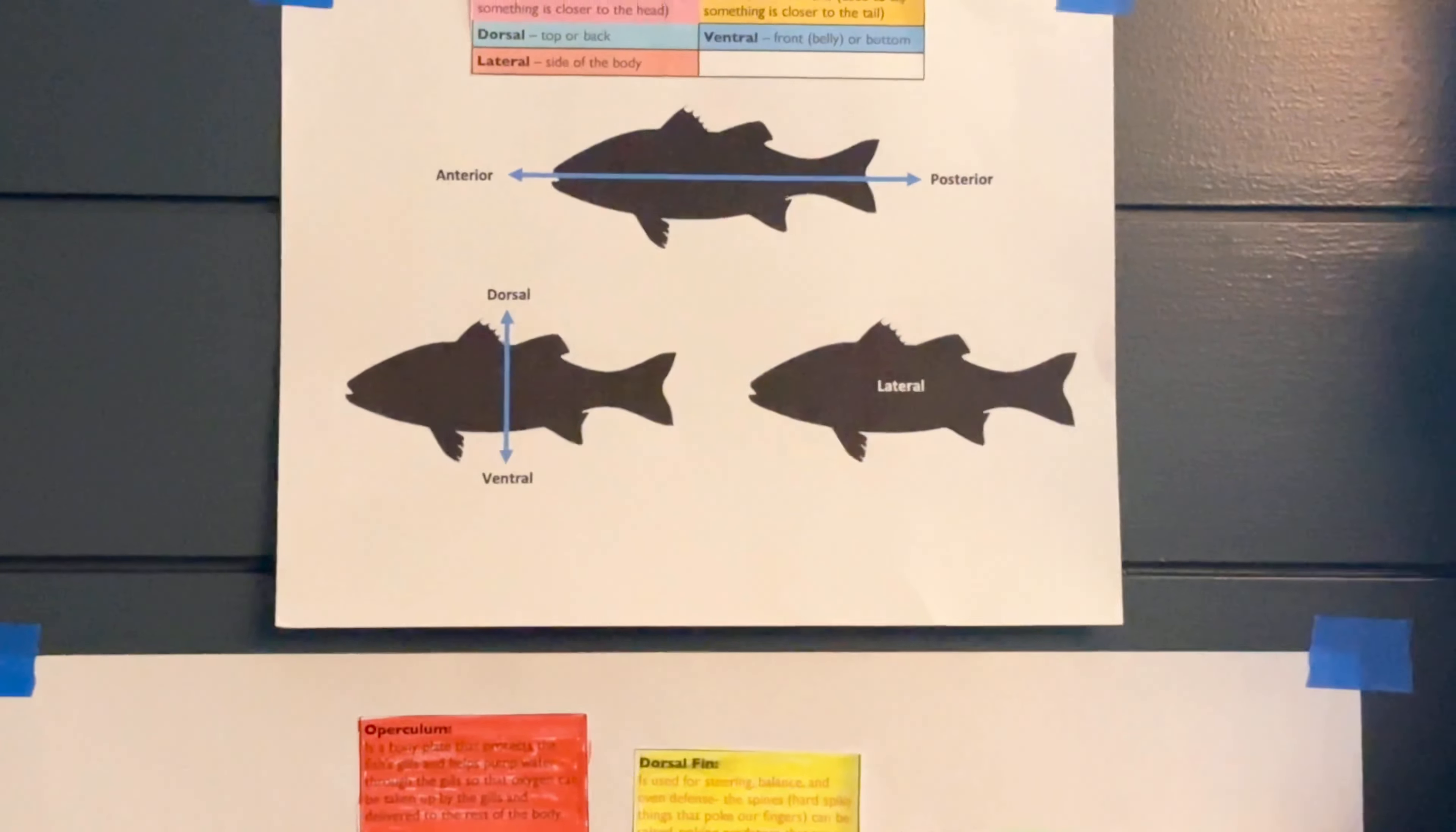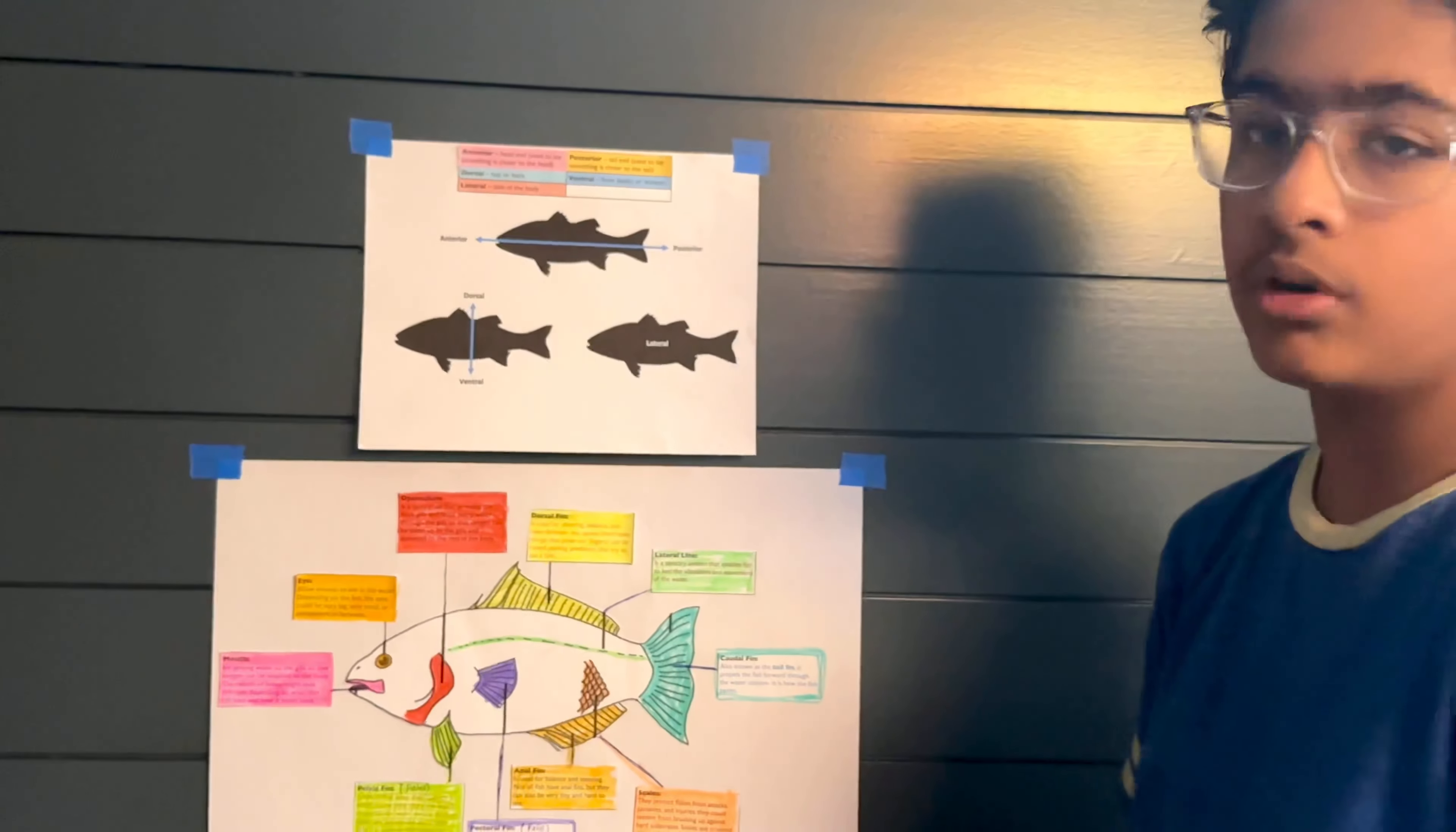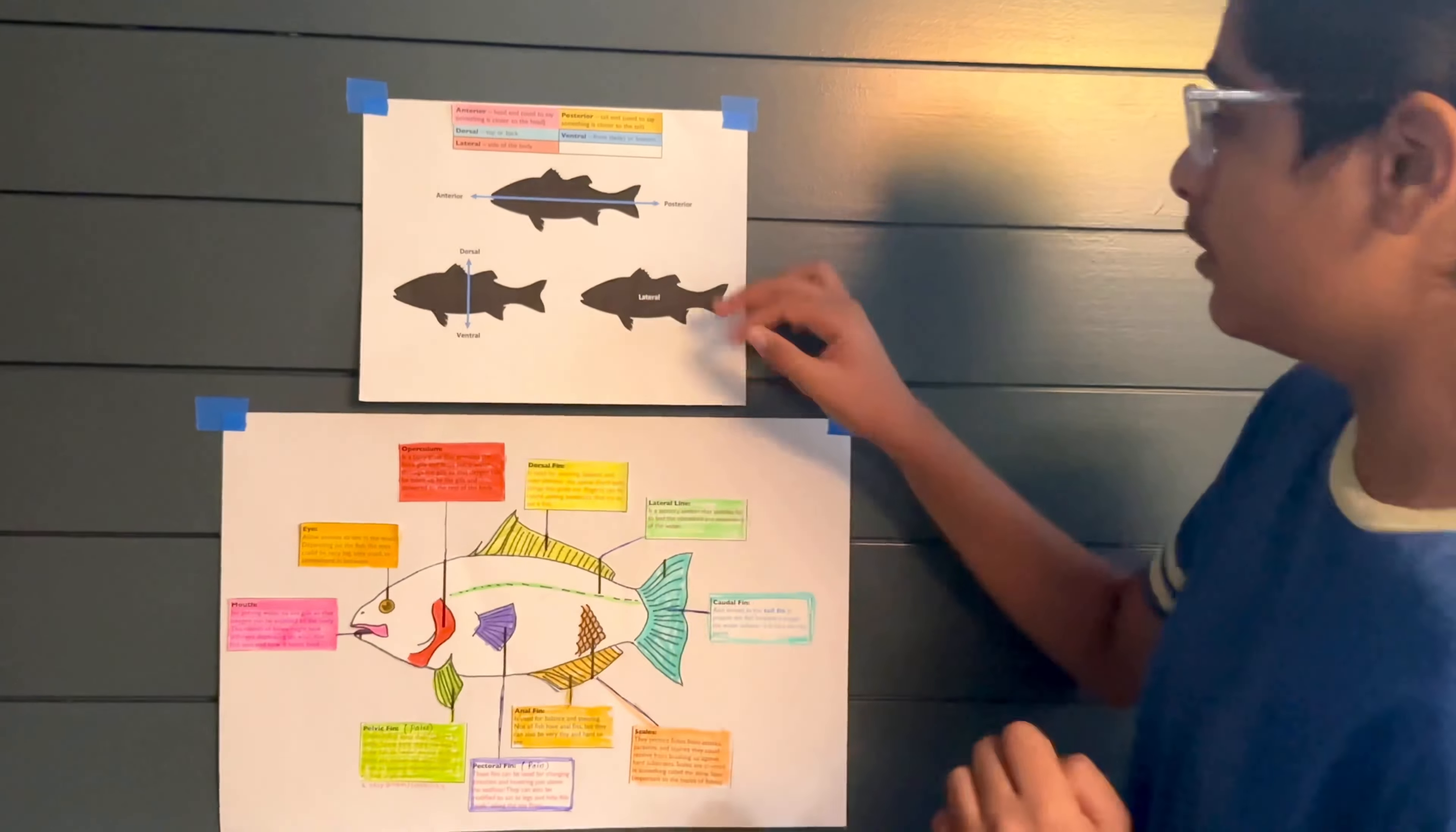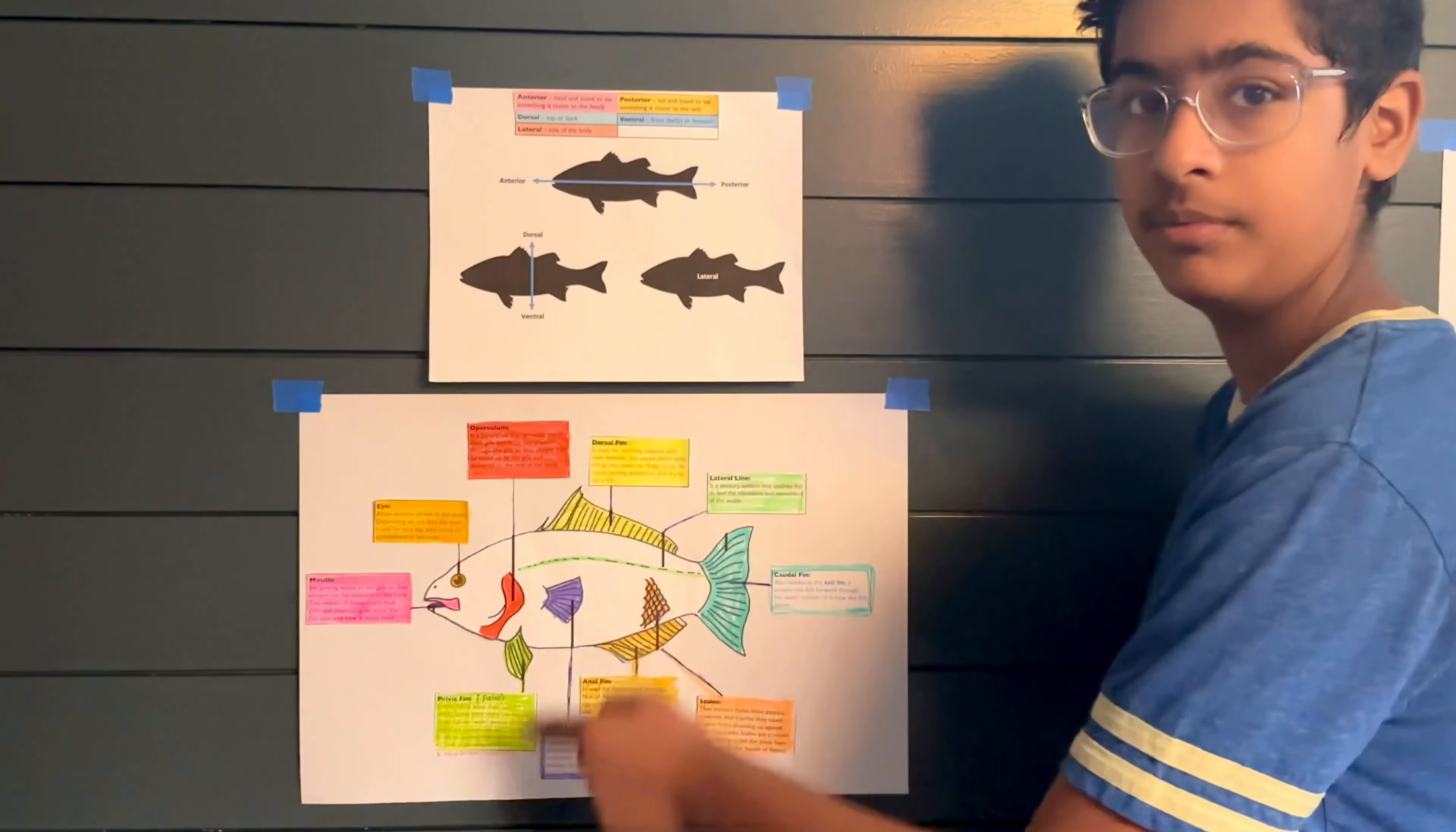Next, there's dorsal and ventral. Dorsal is at the top or for the fish, it's at the back. Ventral is at the bottom or for the fish, it's at the stomach. And lateral means side view. Typically, when we talk about lateral, we're only referring to a side view. This is a picture of the fish and this is the lateral view of a fish.